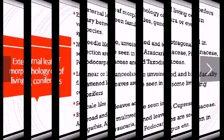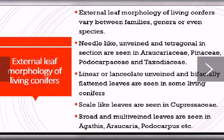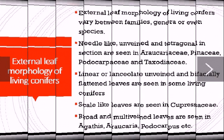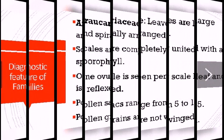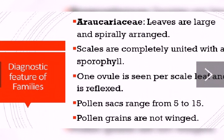Let us discuss the external leaf morphology of living conifers. It varies between families, genera, or even species. Needle-like or unbranched or tetragonal leaf sections are seen in Araucariaceae, Pinaceae, etc. Some may have linear or lanceolate and bifacially flattened leaves. Scale-like leaves are a speciality of Cupressaceae. Broad and multiveined leaves are seen in Araucariaceae and Podocarpus.